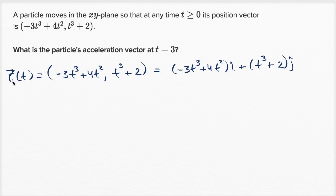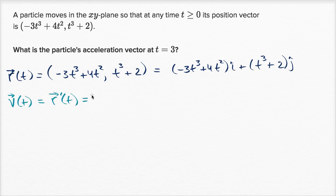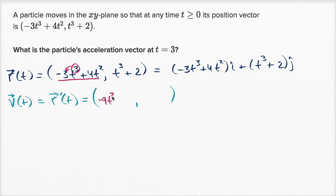The key realization is that the velocity vector is just the derivative of the position vector. So v of t equals r prime of t. We take the corresponding derivatives of each component using the power rule. For the x component: three times negative three gives negative nine t squared, and two times four gives plus eight t.